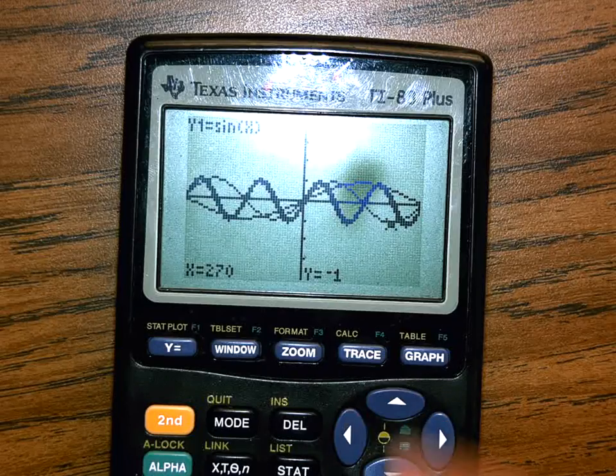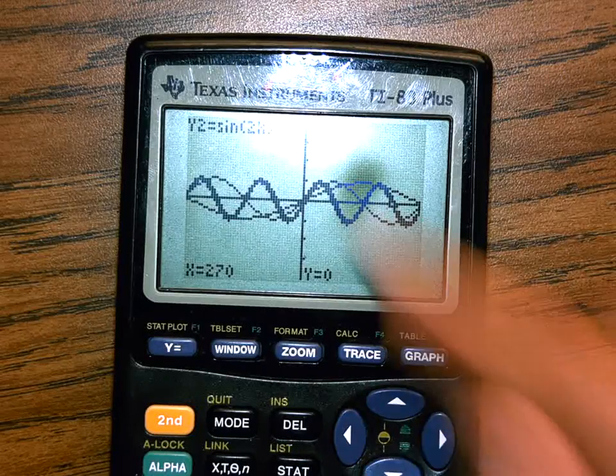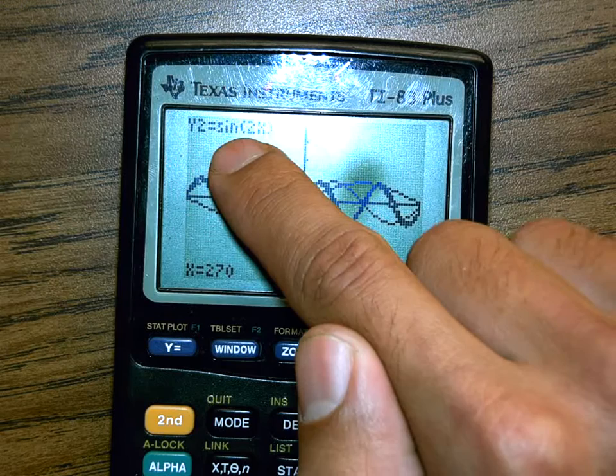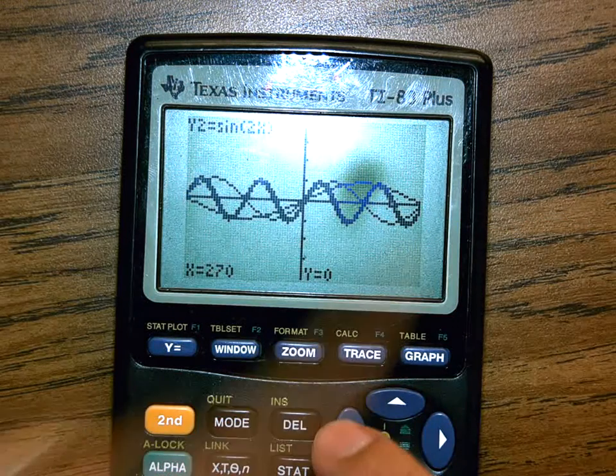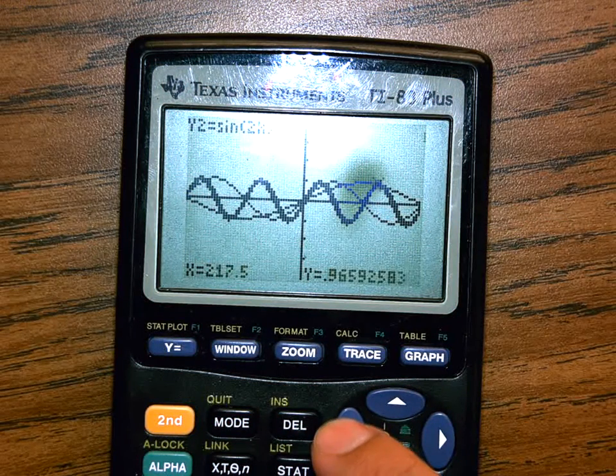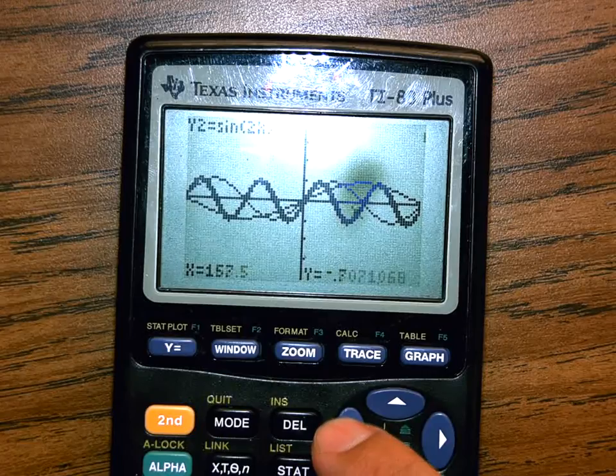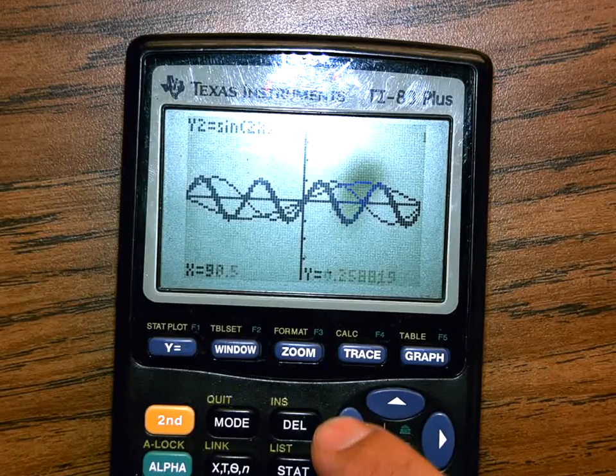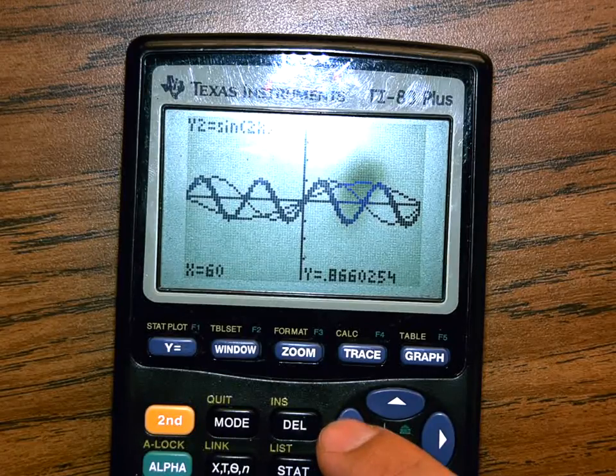If I press down, I can have the second function of sine of 2x. So I can actually trace this function and know which line is it that I've graphed and I can actually trace and know which one is which.